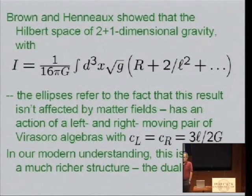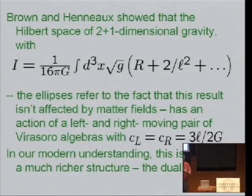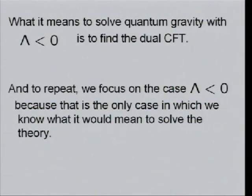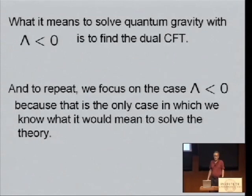Invariance under the Virasoro algebra is part of the structure of conformal field theory, but there's much more to conformal field theory. So from a modern point of view, what they're describing is part of the correspondence of the bulk theory with the conformal field theory on the boundary. So we can simply say what it means to solve the theory for negative lambda. What it means to solve it is to find the dual conformal field theory.